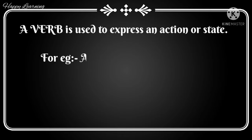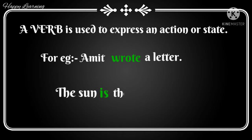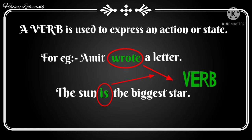Third comes the verb. A verb is used to express an action or state. For example: 'Amit wrote a letter' and 'The sun is the biggest star.' The words in green — 'wrote' and 'is' — are the verbs. The verb in the first sentence describes an action, while the verb in the second sentence defines the state of the thing.